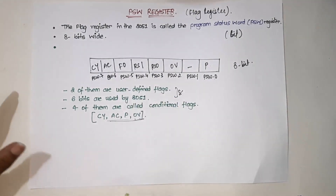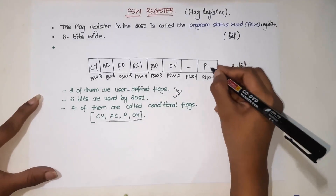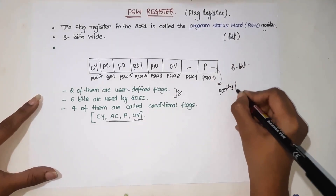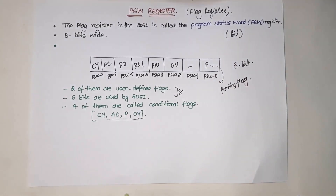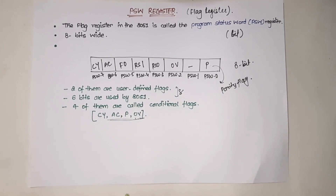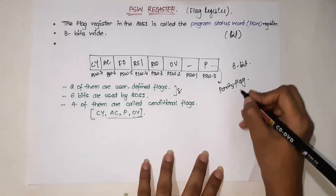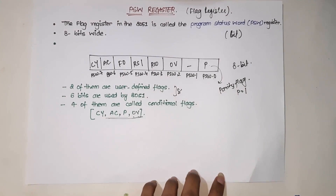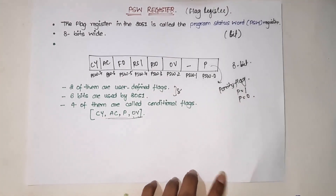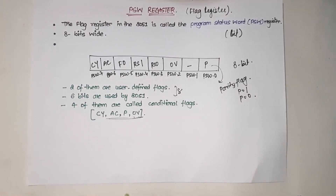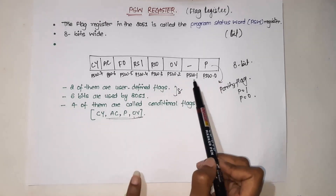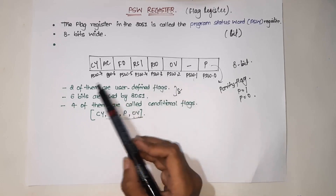Now what are these bits? The first bit, P, represents the Parity flag. This is used to indicate an odd or even number of one-bits in the accumulator. If register A contains an odd number of ones, P becomes 1; but if it has an even number of ones, P becomes 0. So basically this tells us whether the number of ones is even or odd. Next, PSW.1 is a user-defined flag — the first of two user-defined bits.